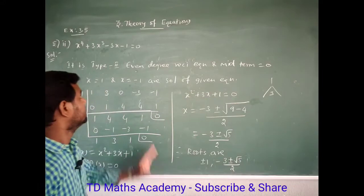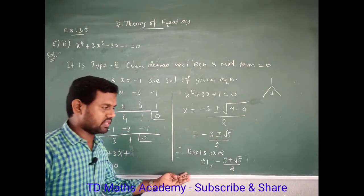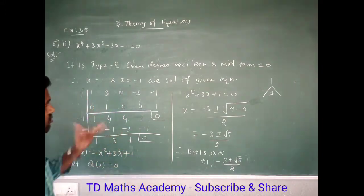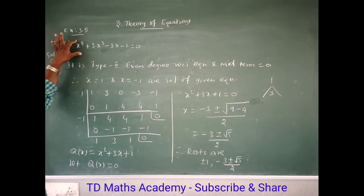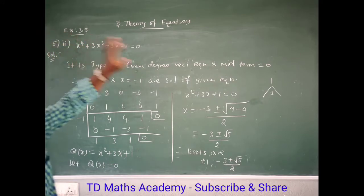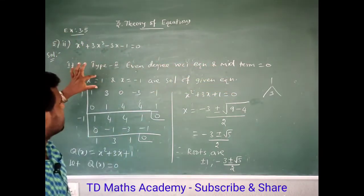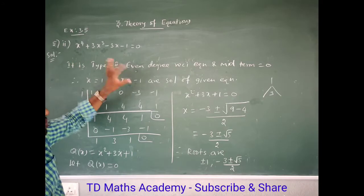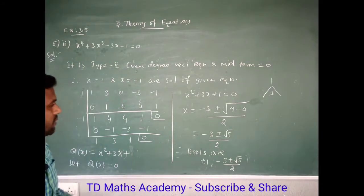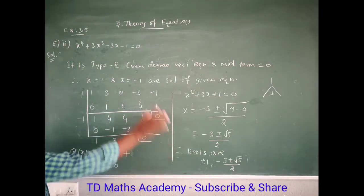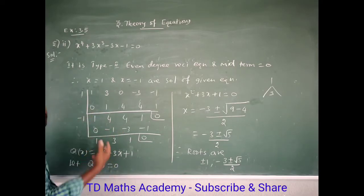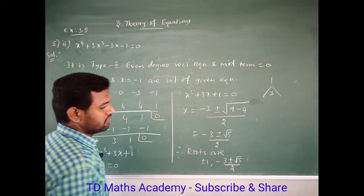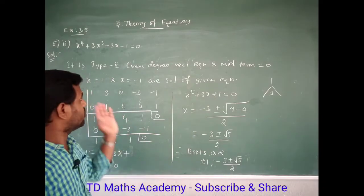Therefore the four roots are ±1 and (-3 ± √5)/2. So we have 4 solutions in total. The method: identify middle term is zero, use synthetic division to get the quadratic, then apply the quadratic formula and solve.